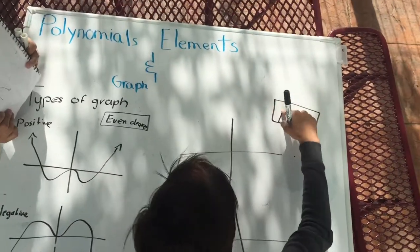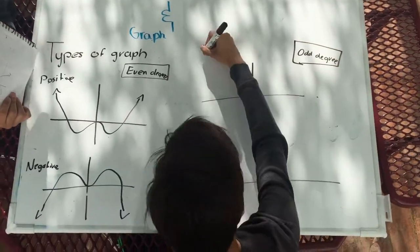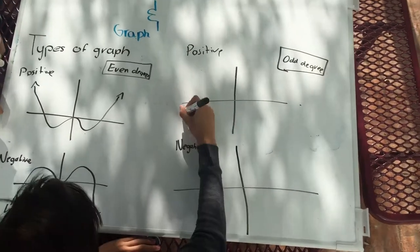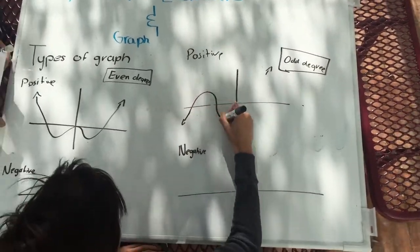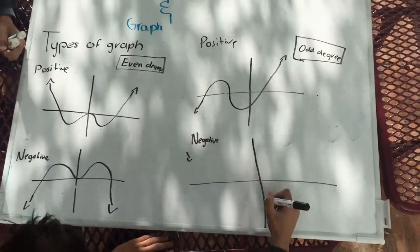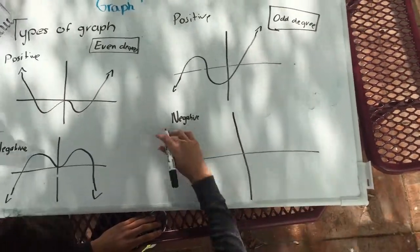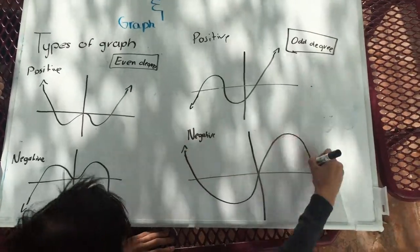When the polynomial has an odd degree with a positive leading coefficient, the left arm will start down and the right arm will finish up. When the polynomial has an odd degree with a negative leading coefficient, the left arm will start up and the right arm will finish down.